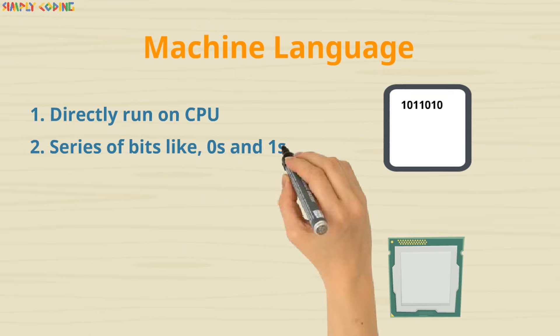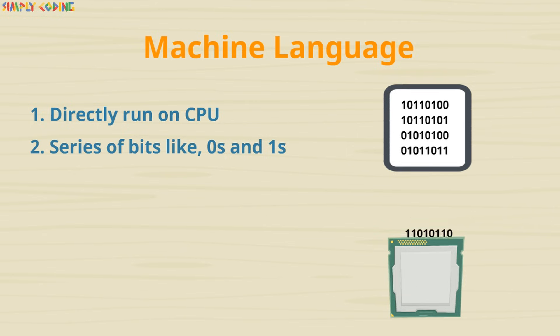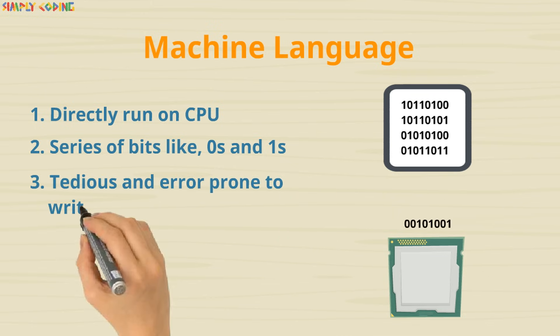Machine language is the language which can directly run on CPU. They are numeric, that means in series of bits which are zeros and ones representing instructions that a computer can understand. This makes it tedious and error prone to write machine code manually.